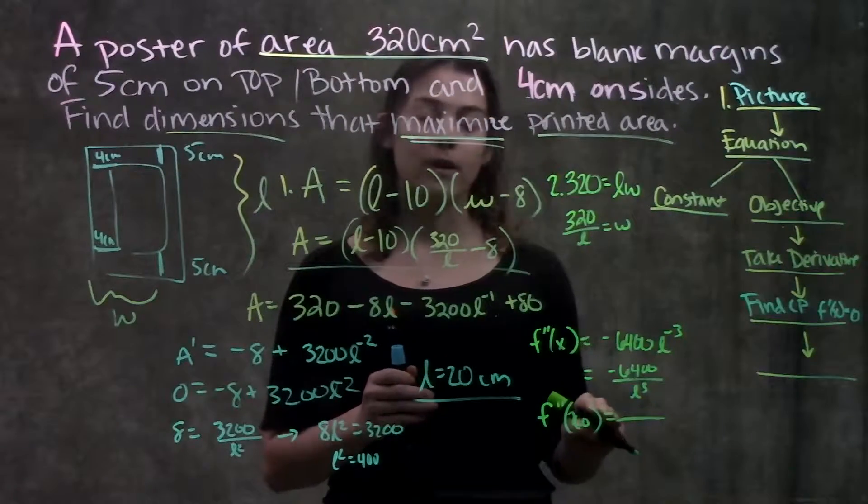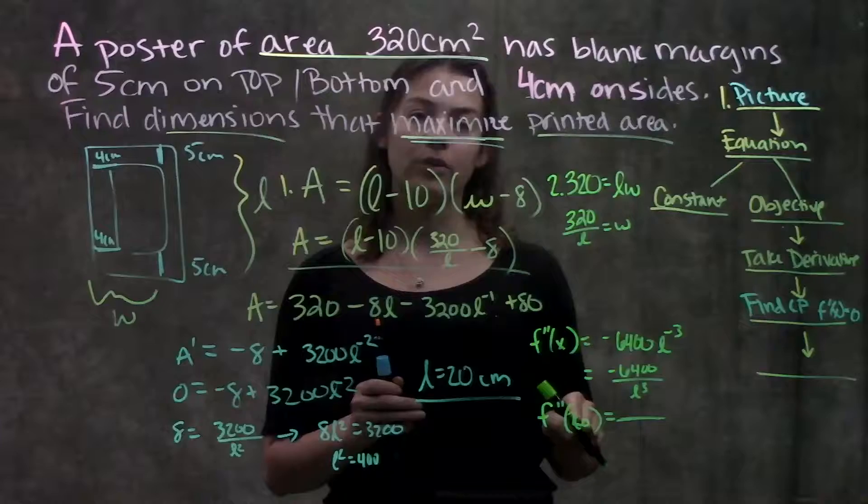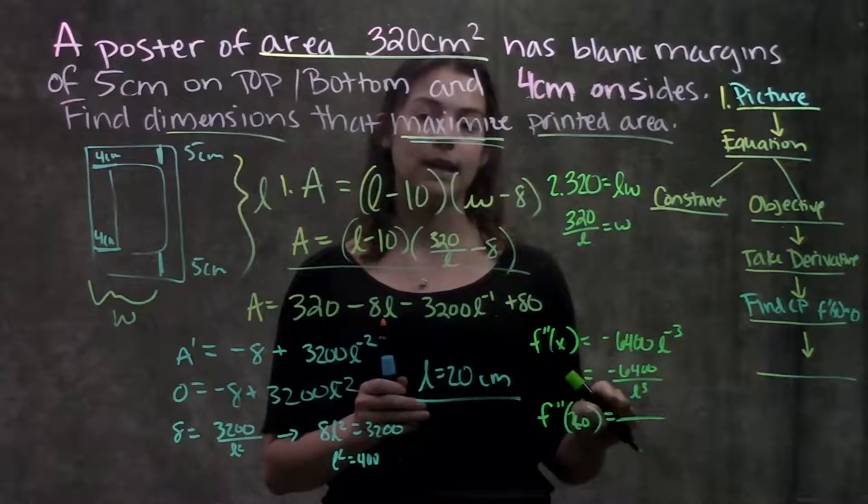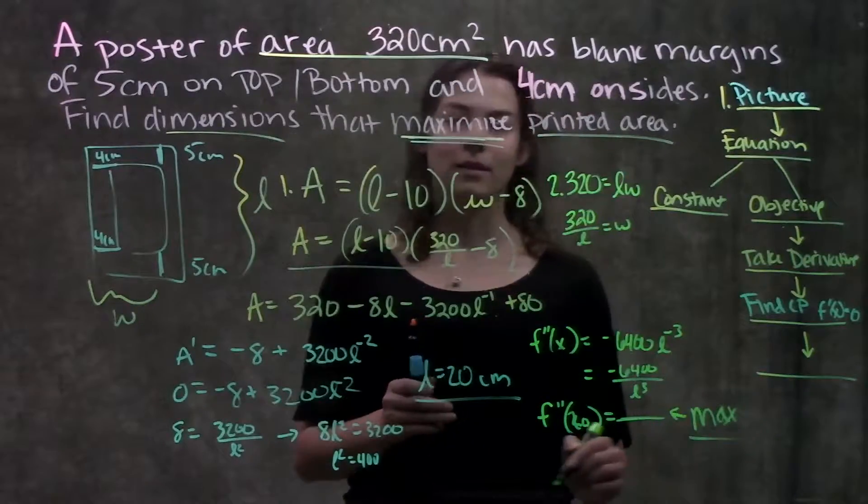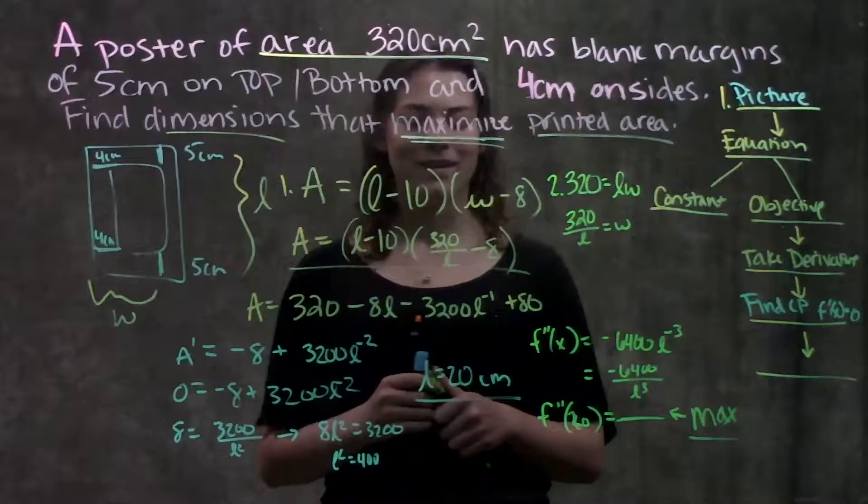And remember, for our second derivative test, if we plug in our critical point to the second derivative and we get a negative value, that means that this is a maximum. So good, that's what we wanted.